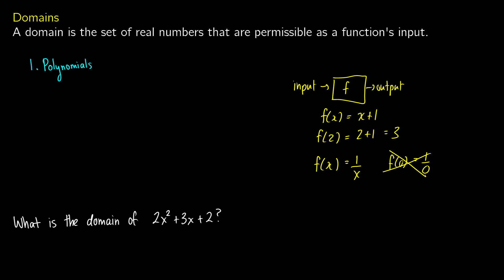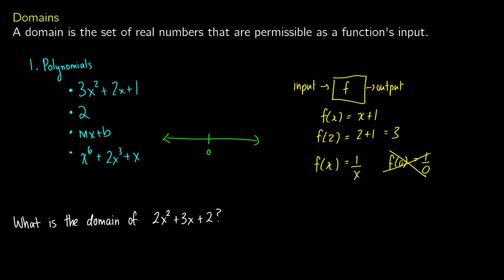The first type is a polynomial. This is something that looks like maybe 3x squared plus 2x plus 1. Maybe it's just a constant like 2, or something like y equals mx plus b where we have variables. Basically, it's the sum of a bunch of things raised to a power — you could even have x to the 6 plus 2x to the 3 plus x. With any of these polynomials, if you take a look at the real number line for what you can have as its domain, it can be anything. The domain of any polynomial is going to be from negative infinity to infinity.